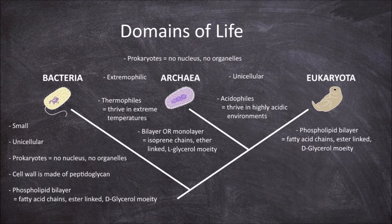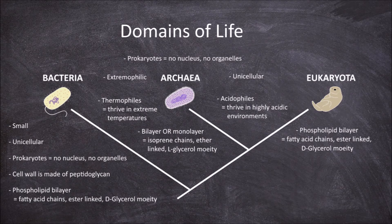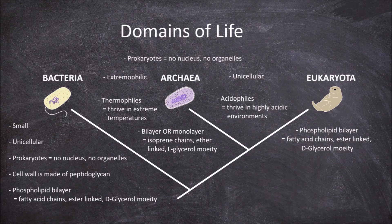These isoprene chains have many side chains coming off from it, giving it a different structure to the fatty acid chains in bacteria and eukaryota. They are also ether linked lipids, instead of ester linked, which is attached to a L-glycerol moiety, instead of a D-glycerol moiety.